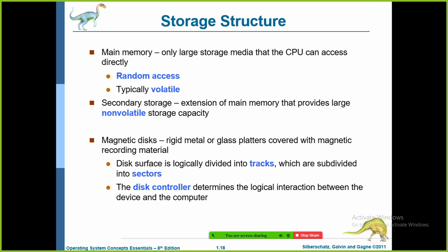The memory unit sees only a stream of memory addresses and does not know how they are generated — whether through indexing or some other means — or what they are being generated for. We can ignore for now how a memory address is generated by a program. In upcoming classes, we will discuss how memory addresses are generated and what type of storage we follow.